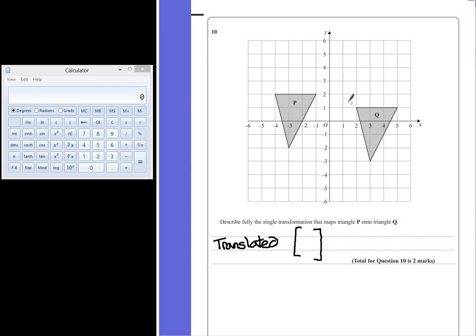It's not the distance between the two shapes, it's how far an individual point has moved. So if we look at this top right hand corner,